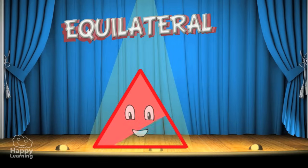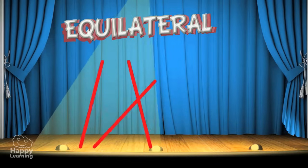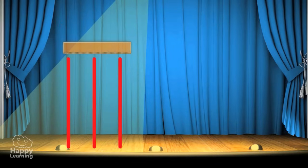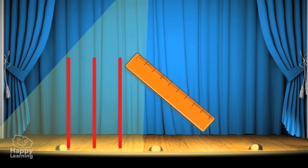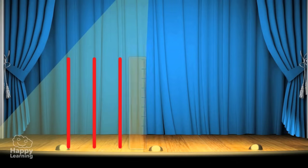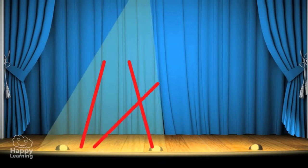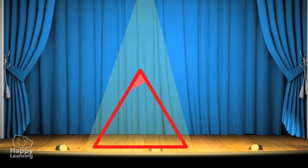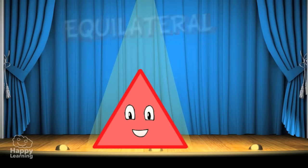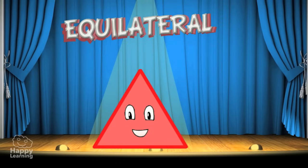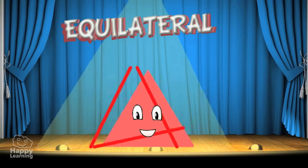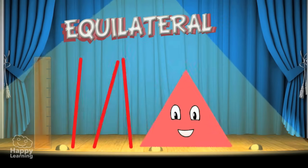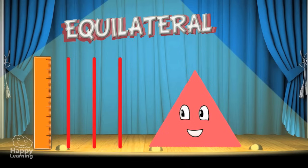In equilateral triangles all the sides are the same length. Can you see how it's formed? Good. So this triangle is equilateral because its three sides are exactly the same.